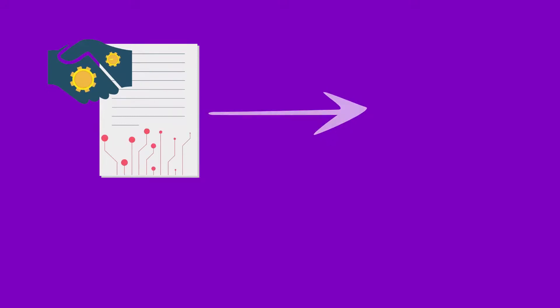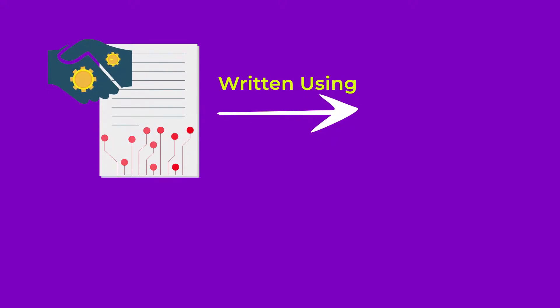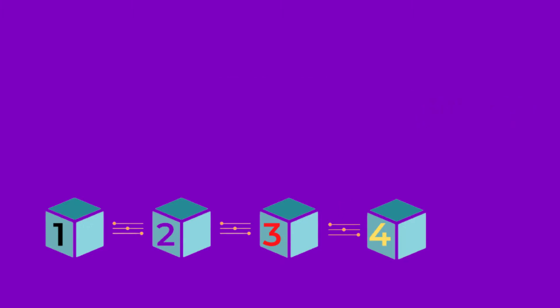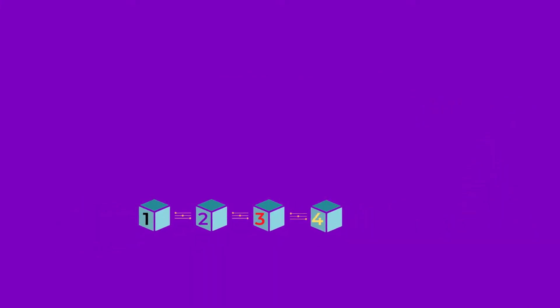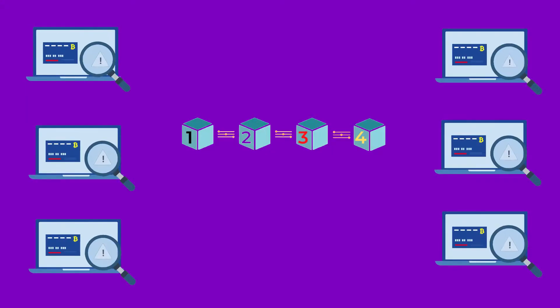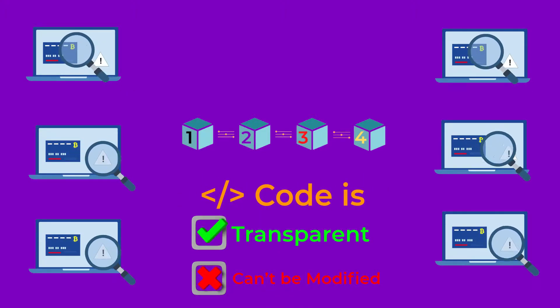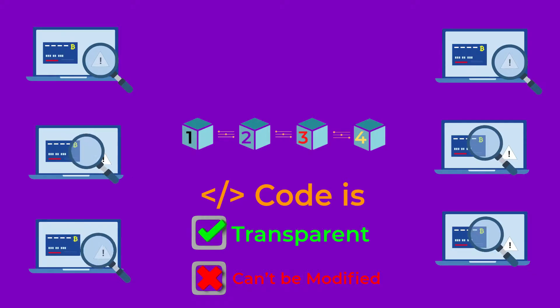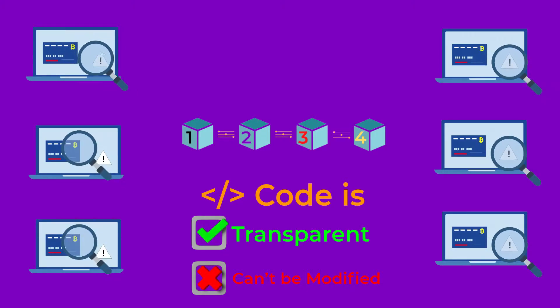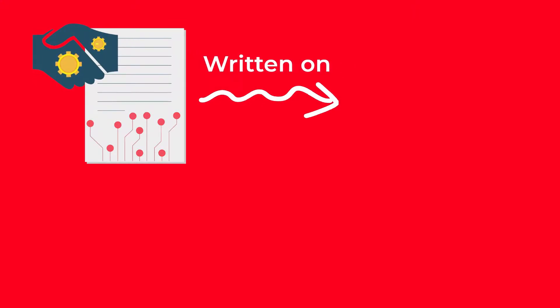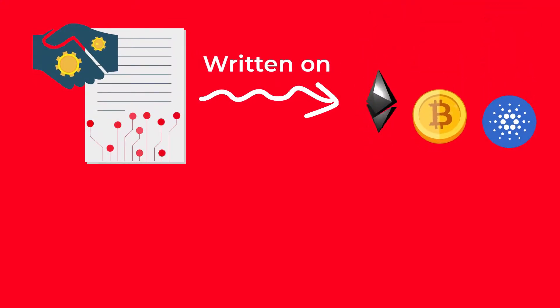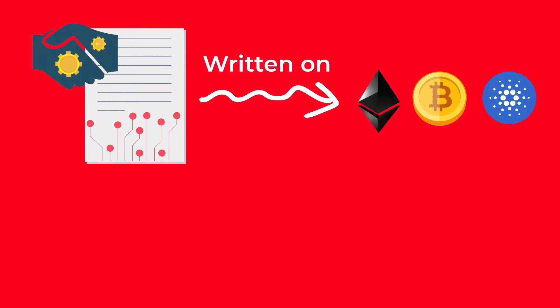Ethereum's smart contracts code is written using a language called Solidity. This code is stored and running on the Ethereum decentralized blockchain, which means the smart contracts code is stored on a lot of computers at the same time. You should know that you can write smart contracts on different blockchains other than Ethereum, like Bitcoin and Cardano, but with different languages other than Solidity.